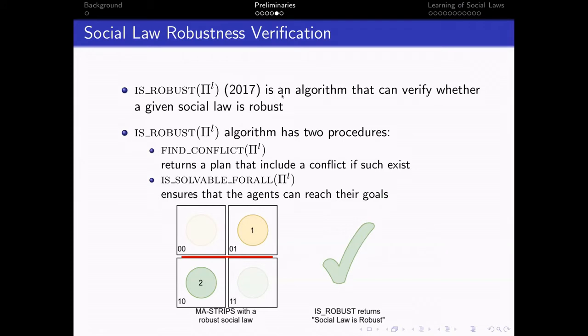In 2017, Karpass et al. proposed IS-ROBUST algorithm that can verify whether a given social law is robust. It has two procedures. The first one finds conflict. It returns a plan that includes a conflict. Of course, if such exists.